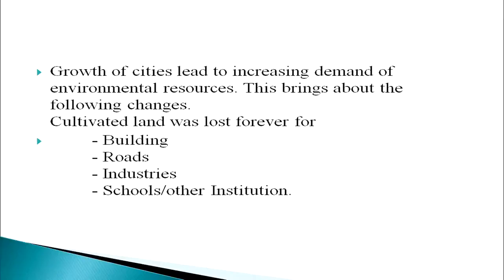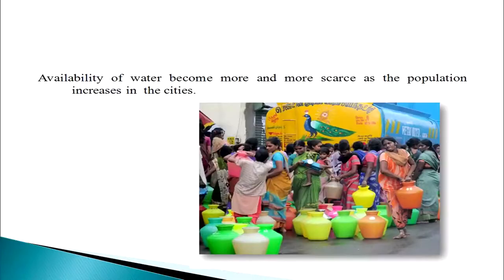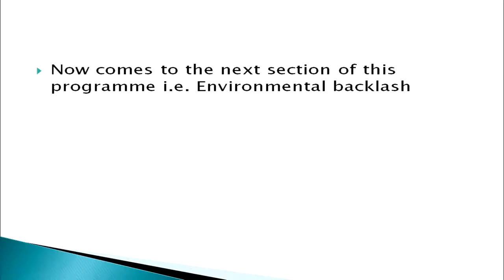This brings about the following changes: cultivated land was lost forever for building roads, schools, or other institutions and industries. Availability of water became more and more scarce as the population increases in cities. You can see this in the figure and we experience it in our daily life as well.